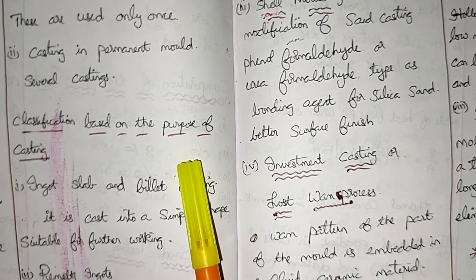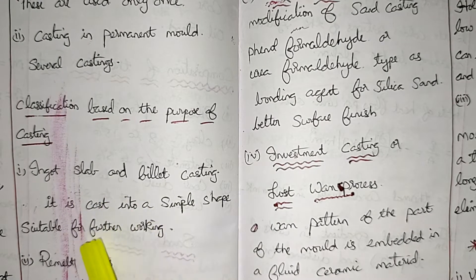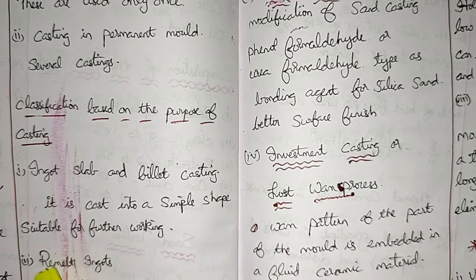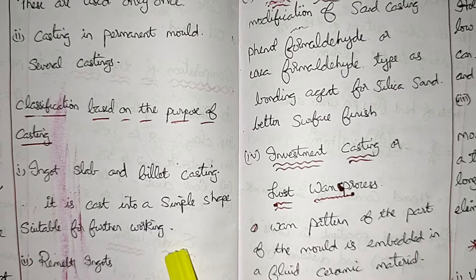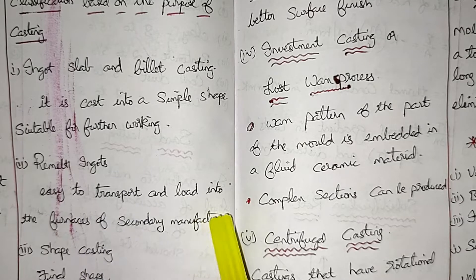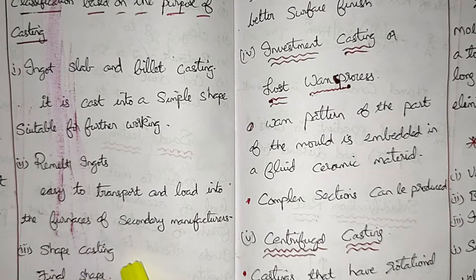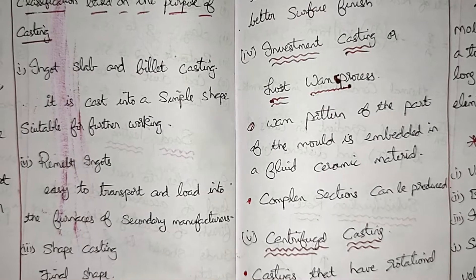Classification based on the purpose of casting: ingot, slab and billet casting - it is cast into a simple shape suitable for further working. And remelt ingots - easy to transport and load into the furnaces of secondary manufacturers. Shape casting and that is the final shape.